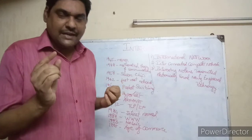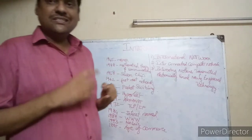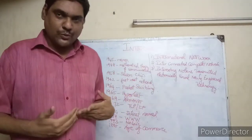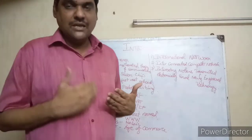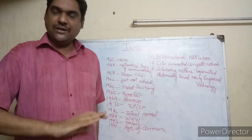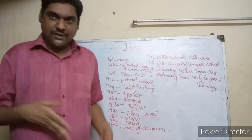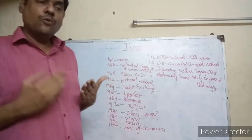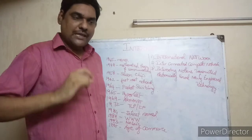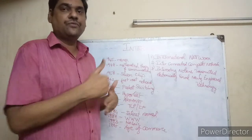In the 3rd generation — 3G — mobile devices could transfer data at 256 Kbps. That is the improvement in the third generation. In the 4th generation — 4G — data transfer speed reached 100 megabits per second. That is called the fourth generation of mobile networks.